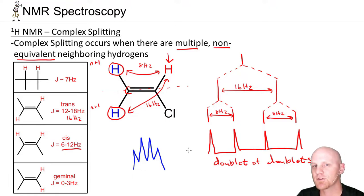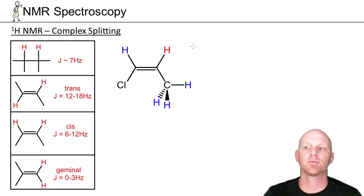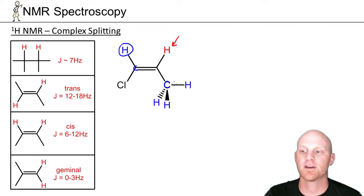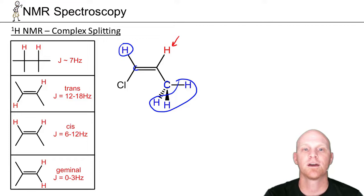This is the first example of complex splitting. Now for the second example — we're going to look at the splitting pattern for a hydrogen indicated in red again. On the adjacent carbon to the left, it has one hydrogen neighbor. On the adjacent carbon to the lower right, it has three hydrogen neighbors. So it ends up having four total neighbors, but we can't treat them as equivalent because these two sets of neighbors are not equivalent — therefore complex splitting is going to occur.